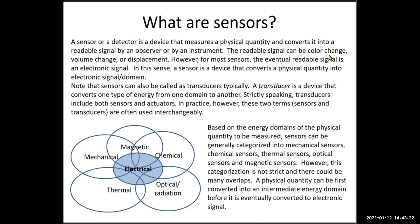The readable signal can be a color change — for example, pH paper used in chemistry class — or a volume change or displacement. The example is a mercury or alcohol-in-glass thermometer. However, for most sensors, the eventual readable signal is an electronic signal, for example voltage. In this sense, a sensor is a device that converts a physical quantity into an electronic signal.